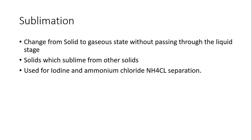Next is sublimation. Recall the physical changes: melting is solid to liquid, freezing is liquid to solid, vaporization is liquid to gas, and condensation is gas to liquid. Sublimation goes directly from solid to gas. There are two substances you must not forget that can sublime: iodine and ammonium chloride (NH₄Cl). You can use this method by heating the mixture — the iodine will sublime, rise up, and you can catch it in a covered glass tube where it cools and reforms. Ammonium chloride also sublimes.